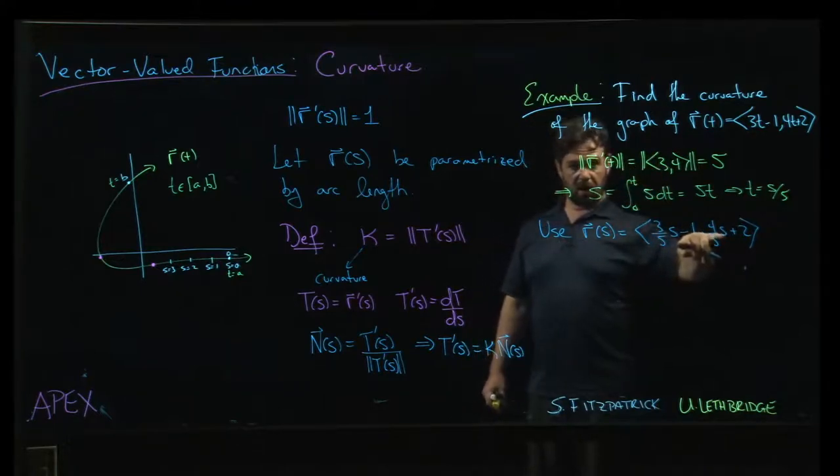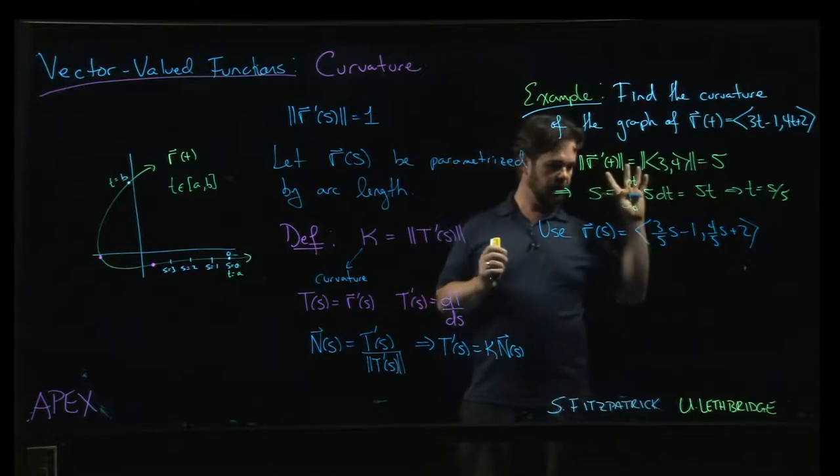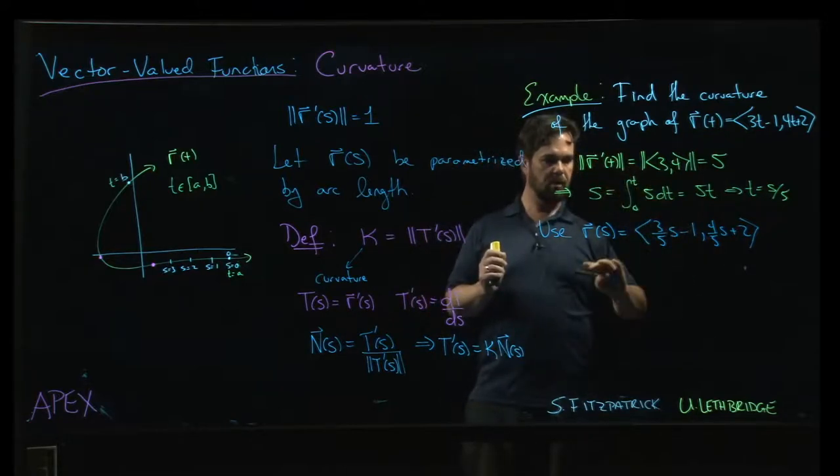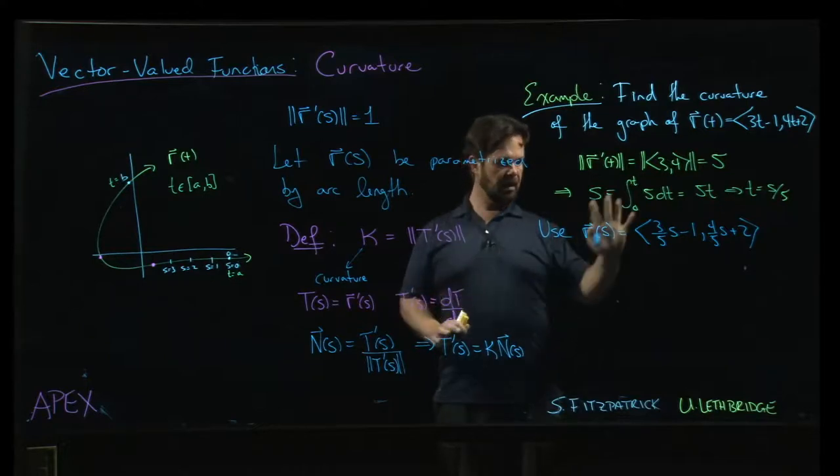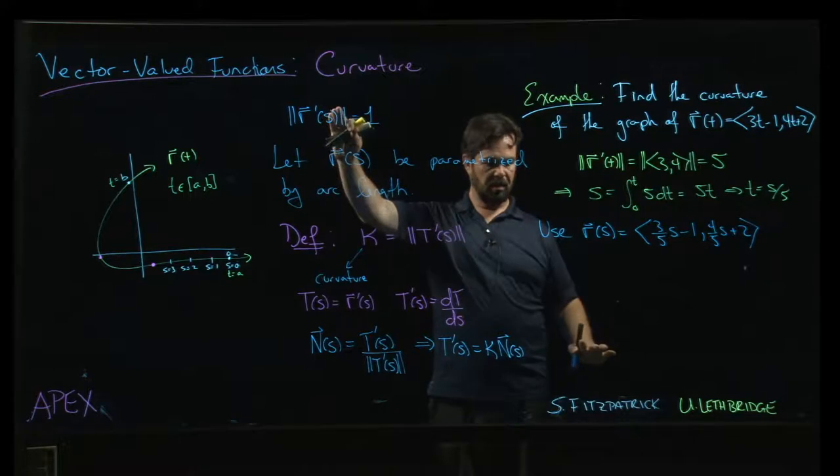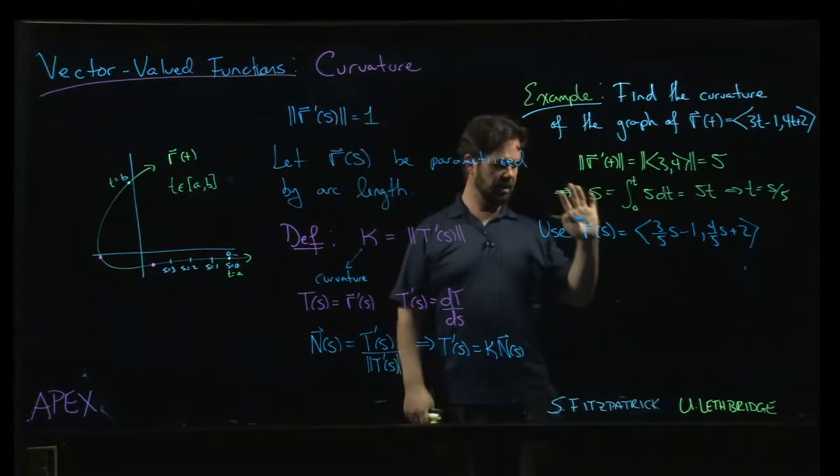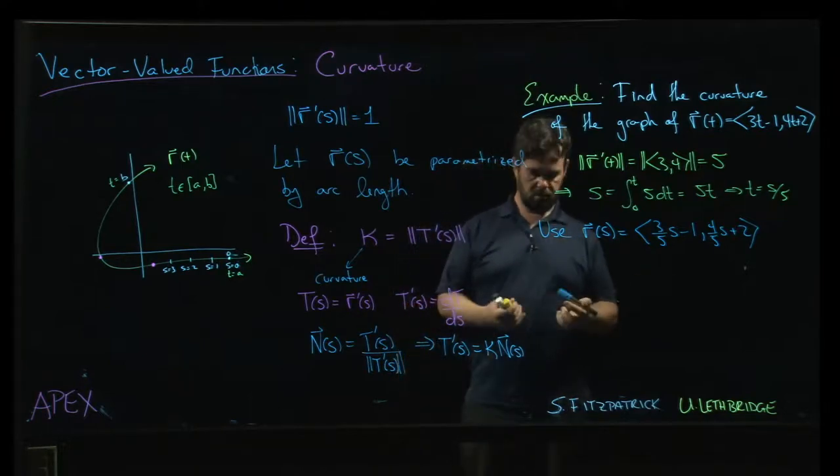Now, this does describe the same set of points. The graph will be the same. And this does now, if you calculate the magnitude of r prime of s, we get 1. And that's the condition that we have to check to confirm that we do indeed have an arc length parameterization, that the derivative is a unit vector.